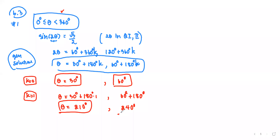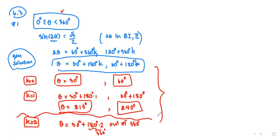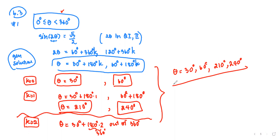If we keep going with k = 2, angle θ = 30° + 180°×2 = 390 degrees, which is outside the first revolution. So we stop at k = 1. We have four answers: θ = 30°, 60°, 210°, and 240°.